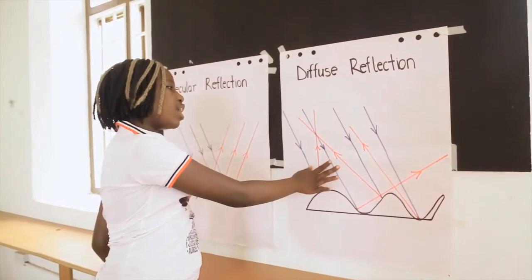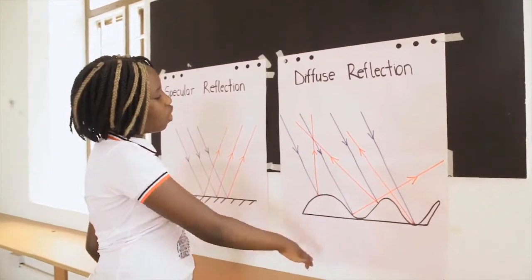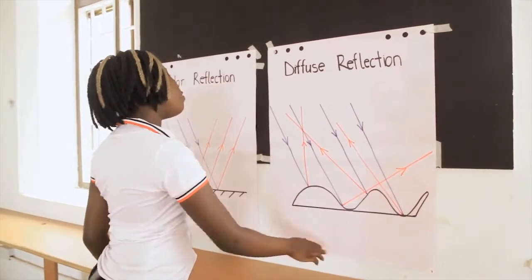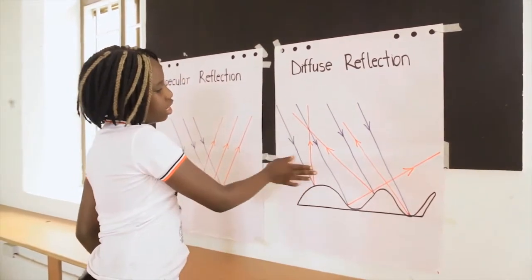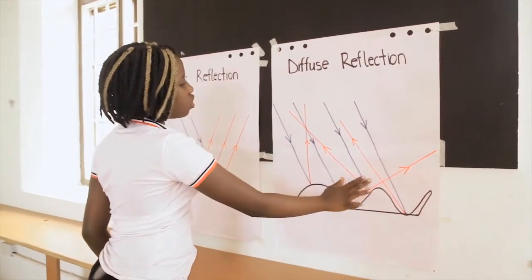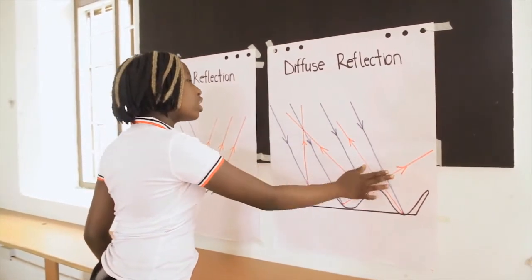Diffuse or irregular reflection occurs on rough surfaces that reflect light. The light gets reflected in all directions at many angles. The light hits and reflects in lots of different directions from the plane.